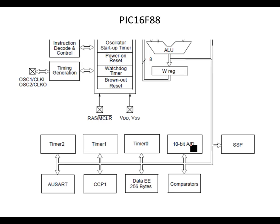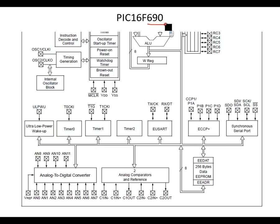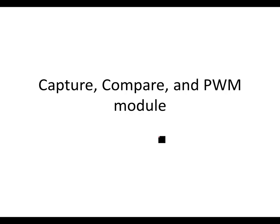When you jump up to the 690, you get even more: a 12-bit analog-to-digital converter, analog comparators and reference, an enhanced CCP module, a synchronous serial port, another UART, more timers, and an ultra-low sleep mode. Those are some of the advanced features on the more advanced chips.